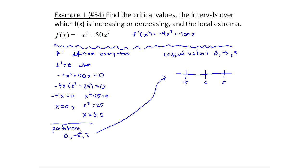These points are where the sign might have changed because f prime crossed the axis. I need to pick test values: a number less than minus five, a number between minus five and zero, a number between zero and five, and a number after five.